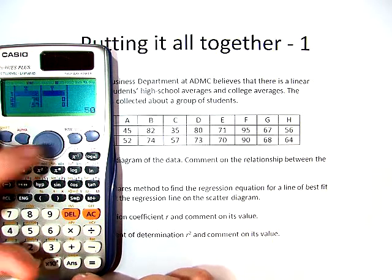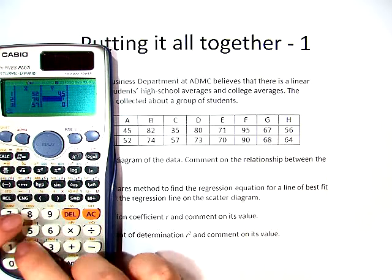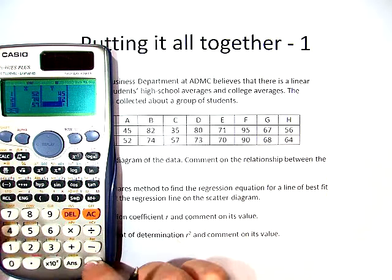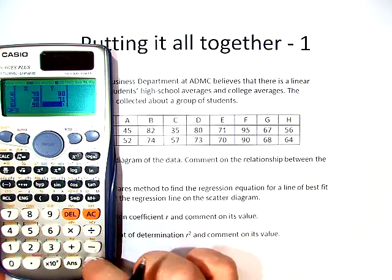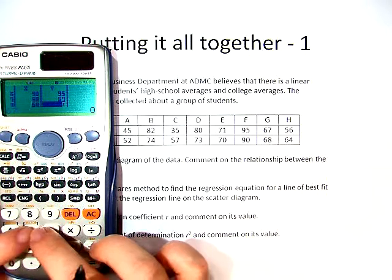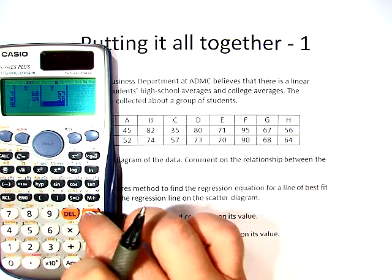We go down and move over and do the same with our y's on top: 45, 82, 35, 80, 71, 95, 67, and 56. We have eight points. They match up beautifully, so let's hit AC.